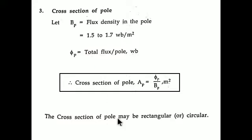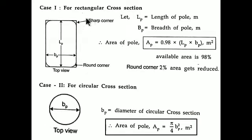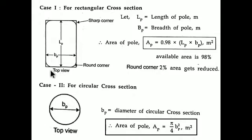There are two types of poles in rotor design: a rectangular pole and a circular pole. For a rectangular cross-section, the formula is Ap = 0.98 × length × breadth of the pole in meter square. The factor 0.98 is used because during designing, the corners are made rounded, which reduces the area by about 2%, so we take 98% of the total rectangular area.